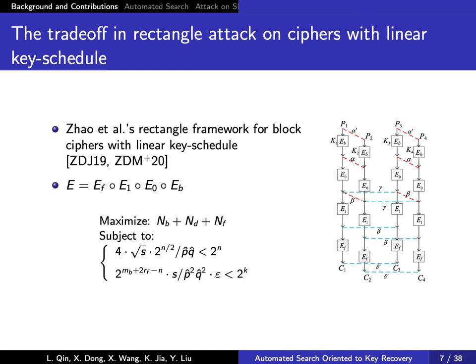For block ciphers with linear key schedule, Zhao et al. proposed a new generalized related-key rectangle attack. As with differential attacks, we analyze the detailed factors that restrict the rectangle attack framework. Then we propose a new automatic MILP model for related-key rectangle attacks on Skinny, where the probability of a distinguisher and the dominating factors of the key recovery phase are systematically processed by the constraints. We are able to find new good properties in the distinguisher, which can be used to perform key recovery attacks covering more rounds than previous results.